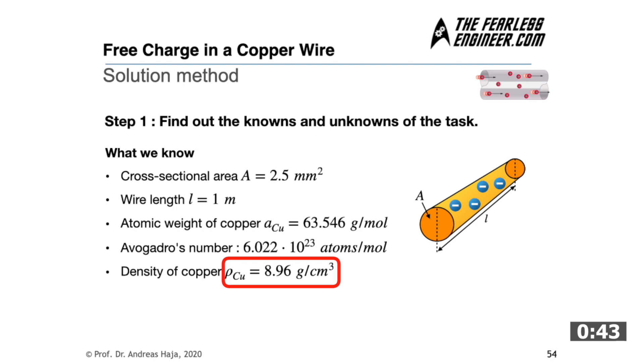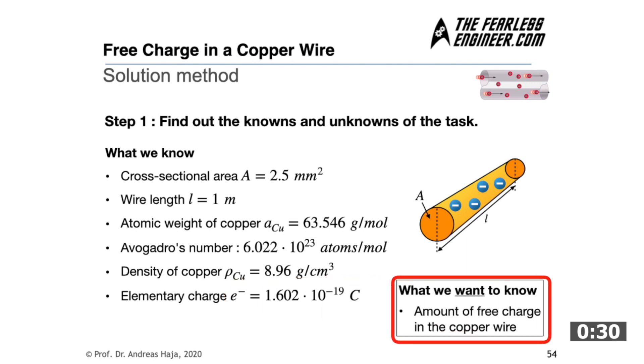Okay, now we've written down almost everything we need to know and the only thing missing is the elementary charge which equals to 1.602 times 10 to the power of minus 19 Coulombs. And last but not least, we write down what we are looking for which is the number of free charges Q within the length of the wire.